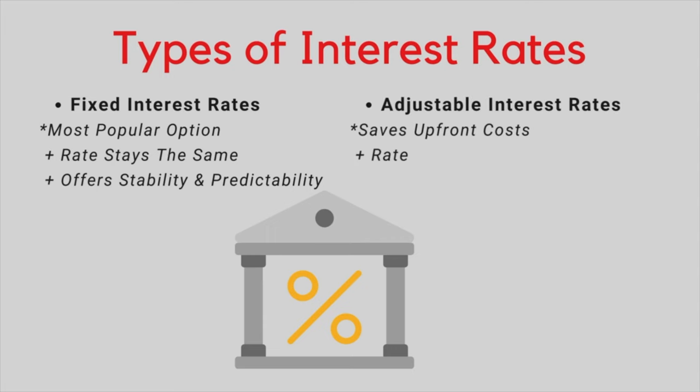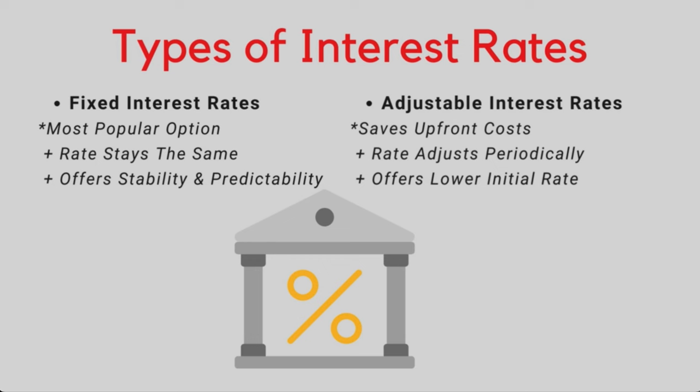Adjustable rate mortgages offer a lower initial interest rate that adjusts periodically after the fixed introductory period. ARMs, as they're called, can be risky if interest rates rise significantly, so be sure to understand the terms. A benefit of the adjustable rate is the lower initial interest rate, which can save money up front and can be a good option if you plan to sell your home before the rate adjusts. A downside is that the interest rates can fluctuate, potentially leading to higher monthly payments in the future and less predictability for budgeting.